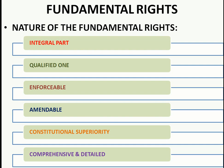Regarding enforceability: our fundamental rights are justiciable, meaning if the state, government, or public authority violates our rights, we can go to the Supreme Court. We also have the right to constitutional remedies under Article 32, which provides five kinds of writ jurisdictions: Habeas Corpus, Mandamus, Certiorari, and others. We can also file a Public Interest Litigation (PIL) and approach the Human Rights Commission - these are all enforceable remedies.